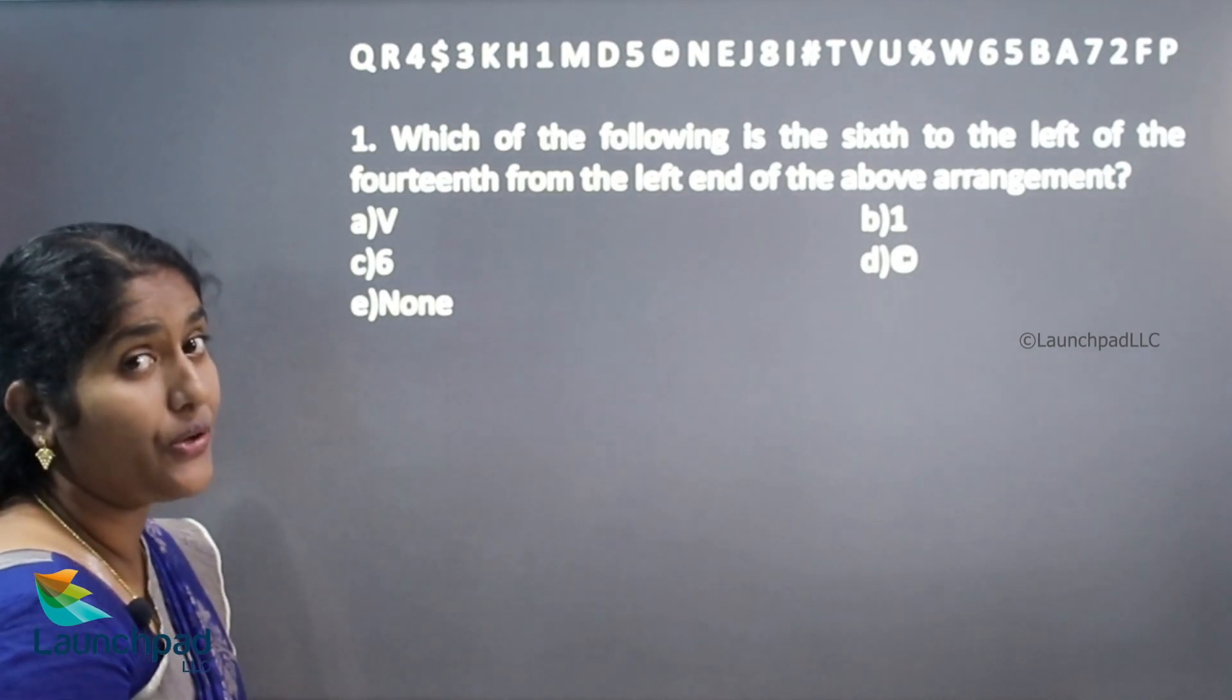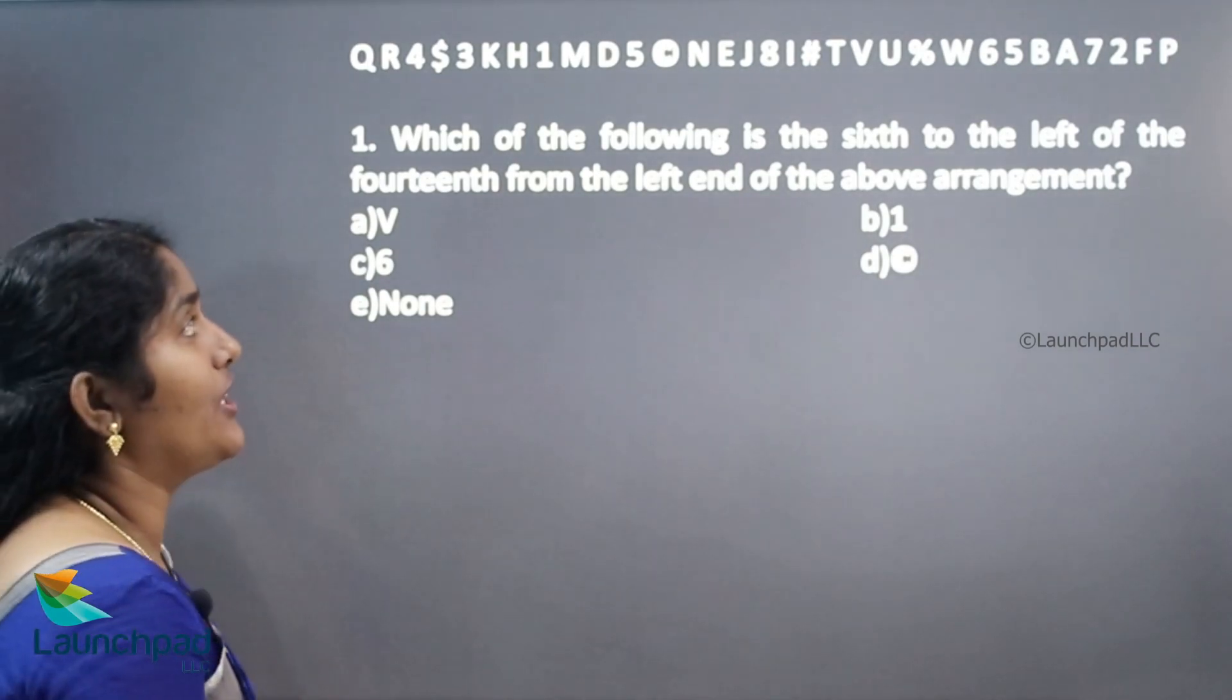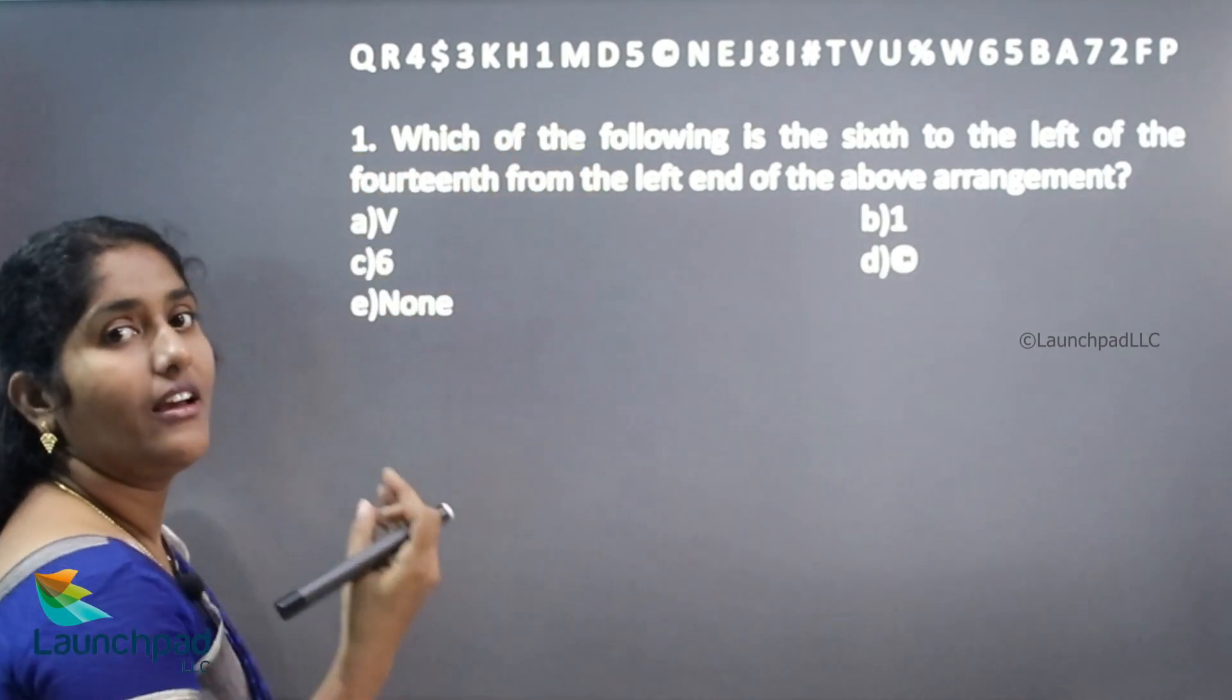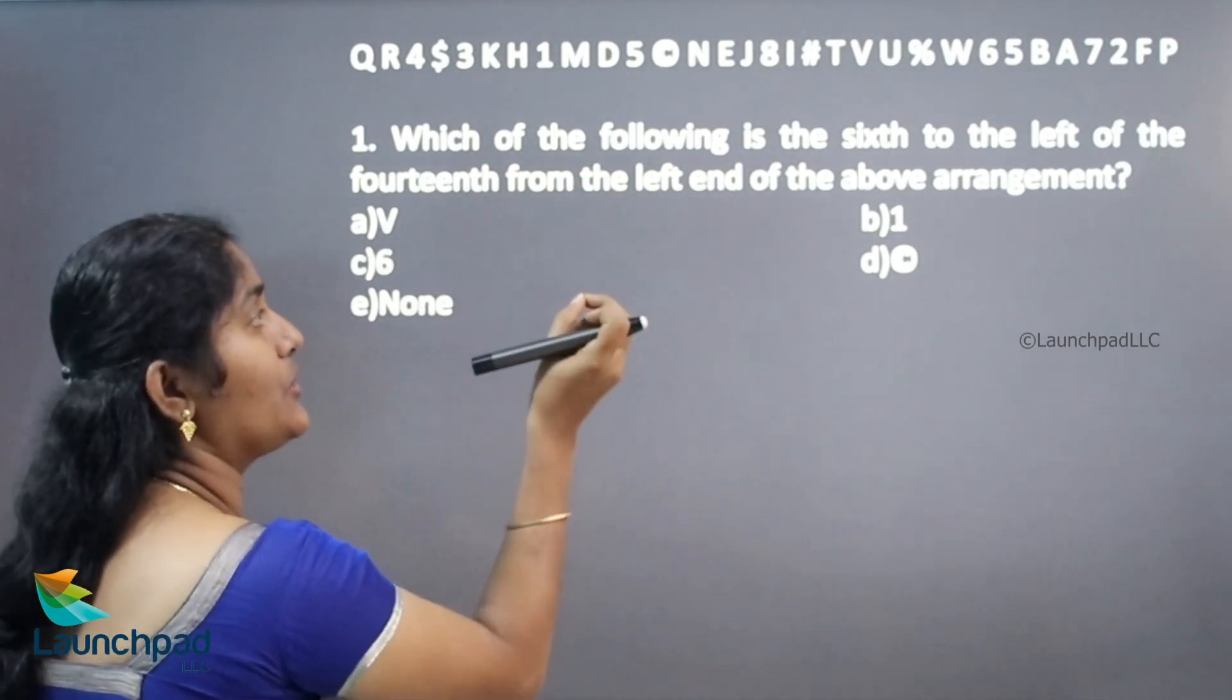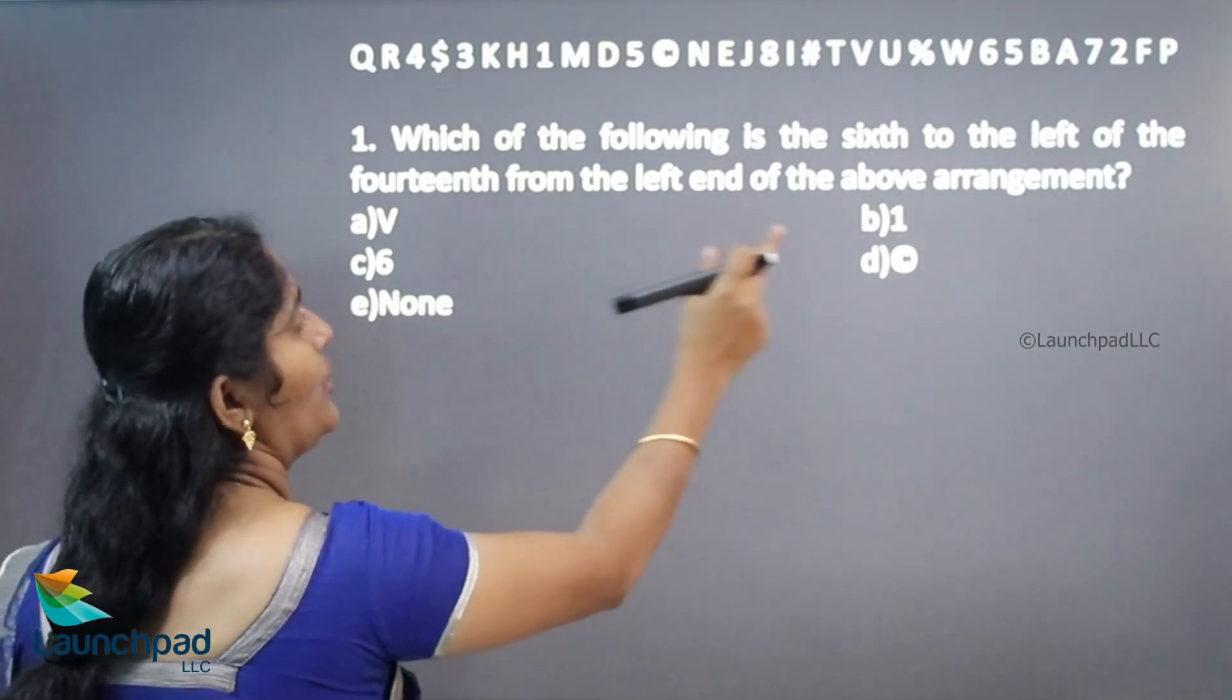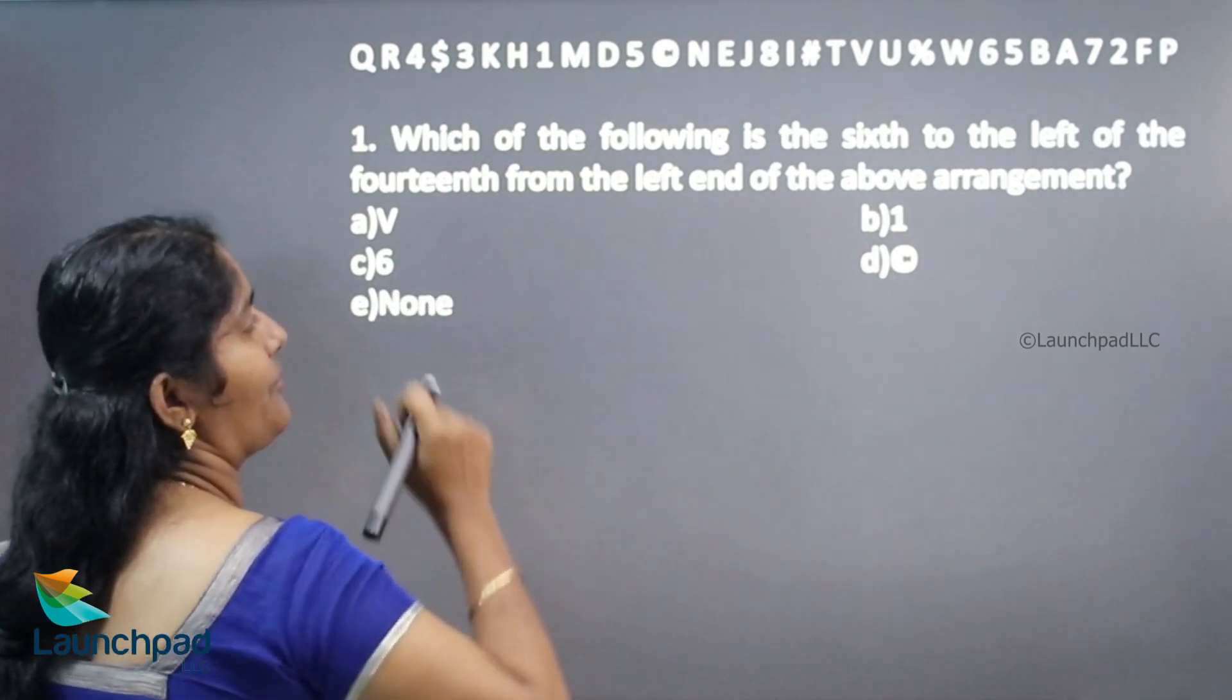In this video we are going to count the respective element with their position. They given one series, in this series having elements, letters, symbols. In this series you need to count which of the following, the following 4 options are there. 6th to the left of the 14th from the left end.